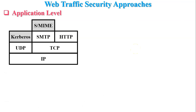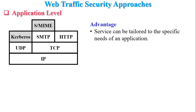The next one is application-level security. It provides application-specific security services embedded within particular applications. For example, when sending mail with a multimedia file, it provides security based on SMTP and MIME protocols. The advantage of this approach is that services can be tailored to the specific needs of an application.